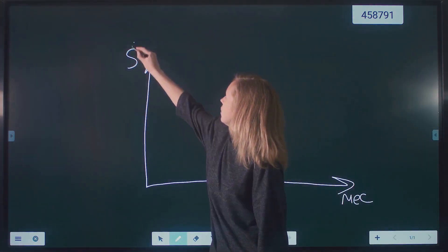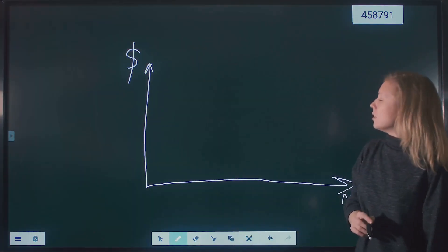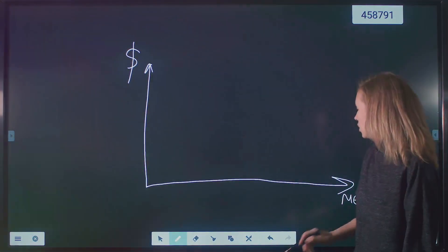The weights assigned to the points in the subset are determined by their distance from the point of interest. Points that are closer to the point being estimated have higher weights, while points that are farther away have lower weights.